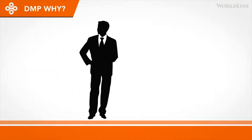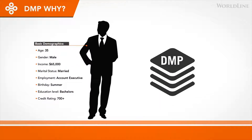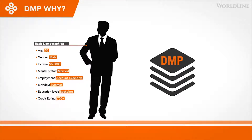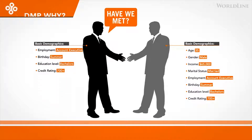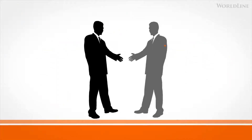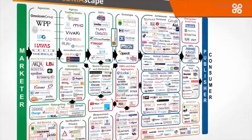Let's say you want to find new customers who look like your current customers. You can use current data for a baseline profile of who buys your products, then match that to external third-party data captured within your DMP to learn more about their lifestyles. Then you can find similar people who don't currently buy your products and tailor your offerings to them.